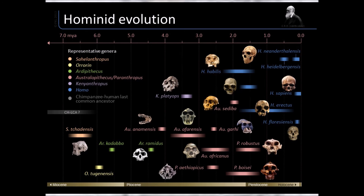Next time we're going to talk about the three Paranthropus species — Paranthropus aethiopicus, Paranthropus boisei, and Paranthropus robustus — and what makes them different from the australopithecines. So we've got the australopithecines and Paranthropus, and we'll discuss that difference next.